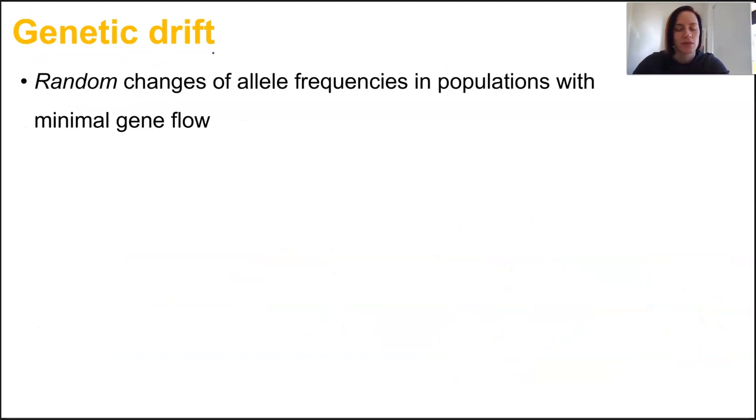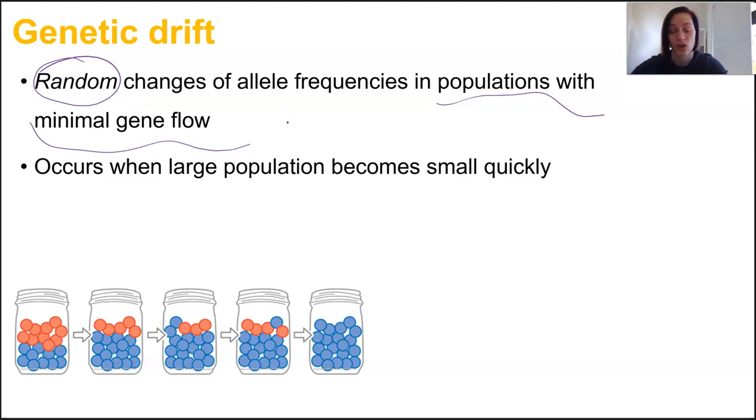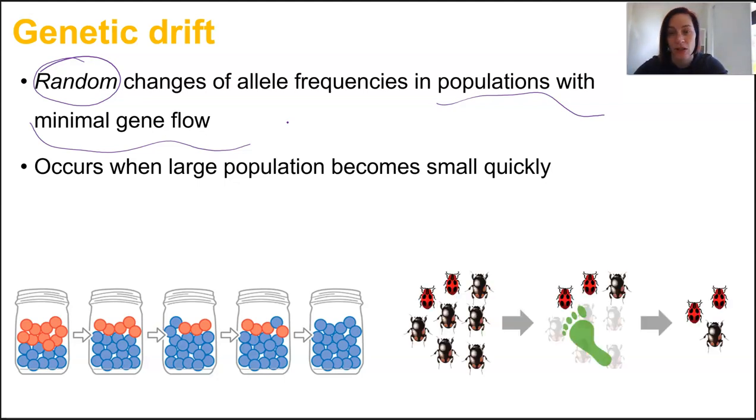Genetic drift describes random changes of allele frequencies in small populations, those which don't see much gene flow at all. So again we're seeing random change but it's talking about populations with minimal gene flow, so small in numbers. Now every reproductive event involves some kind of chance, random assortment, recombination, random fertilization, but if a population is really small, sometimes particular genes aren't passed on at all and they can actually disappear within that population. And this can happen really frequently when a larger population becomes small in a relatively short time frame. And we see this when we talk through populations that undergo the bottleneck effect or the founder's effect.